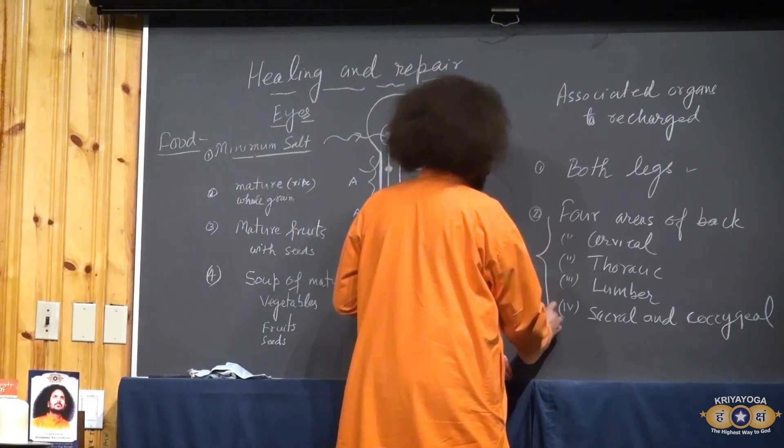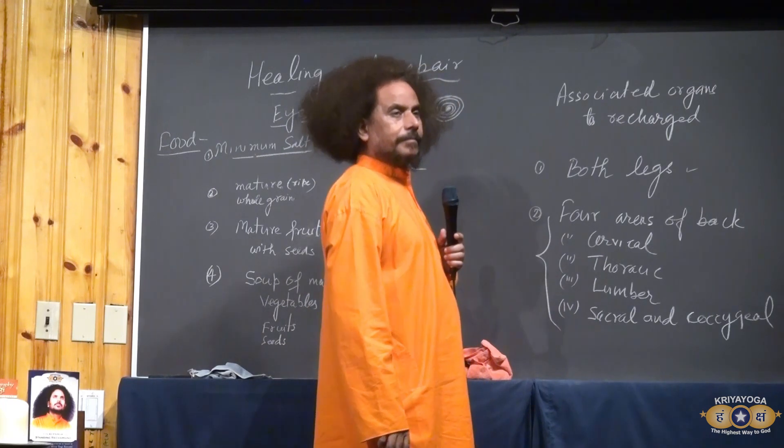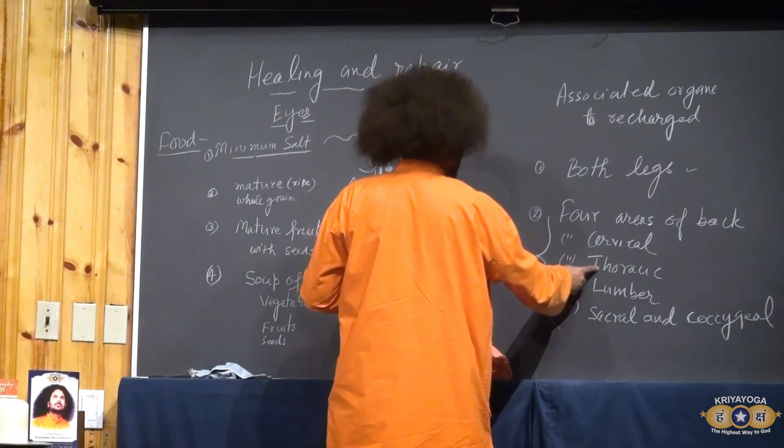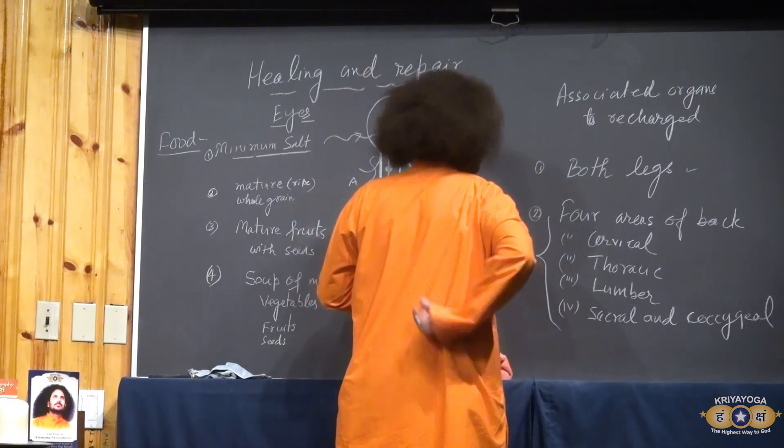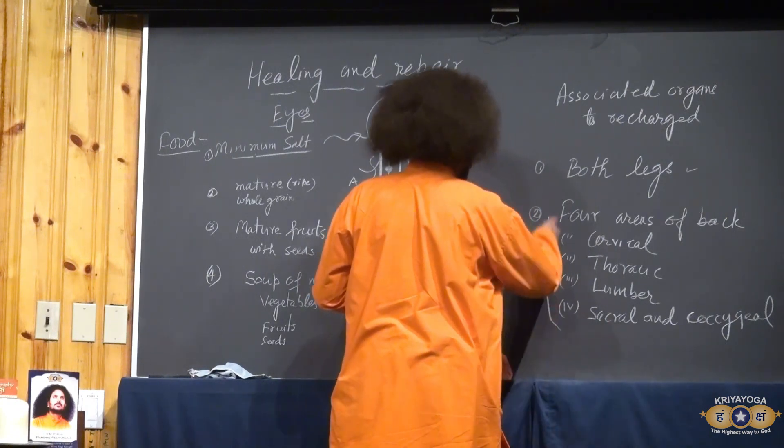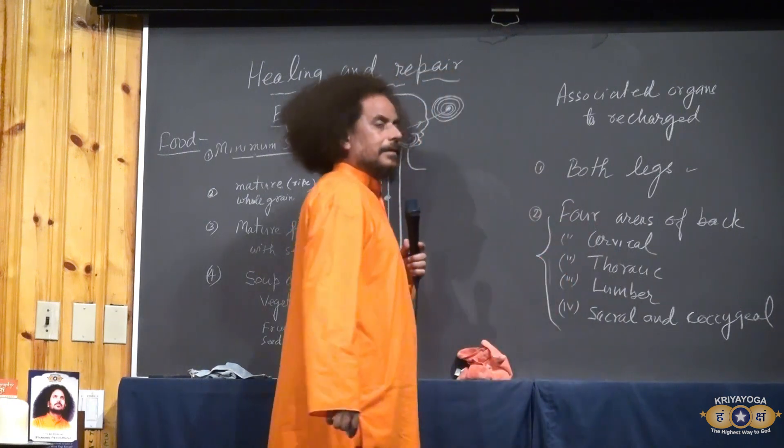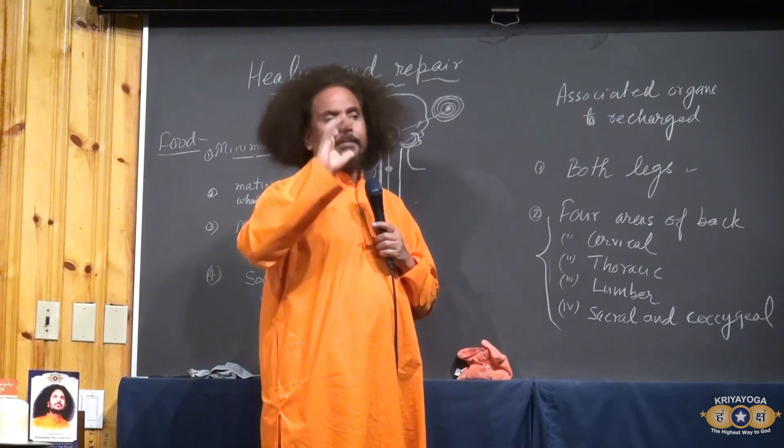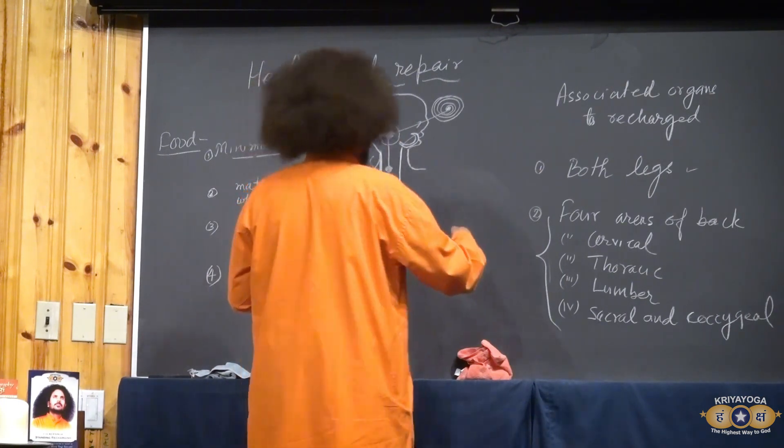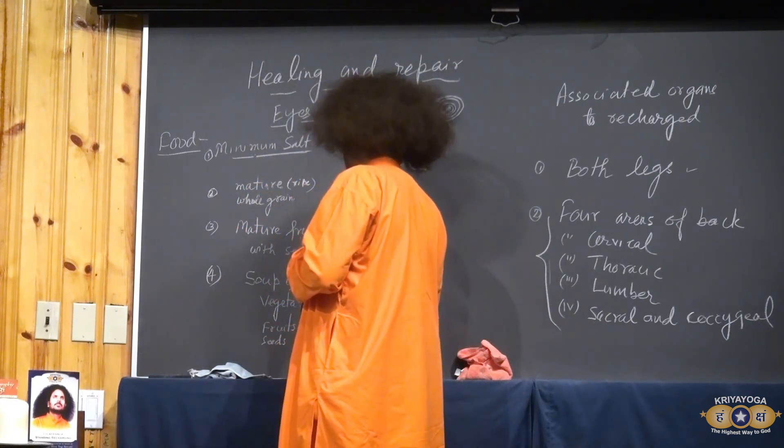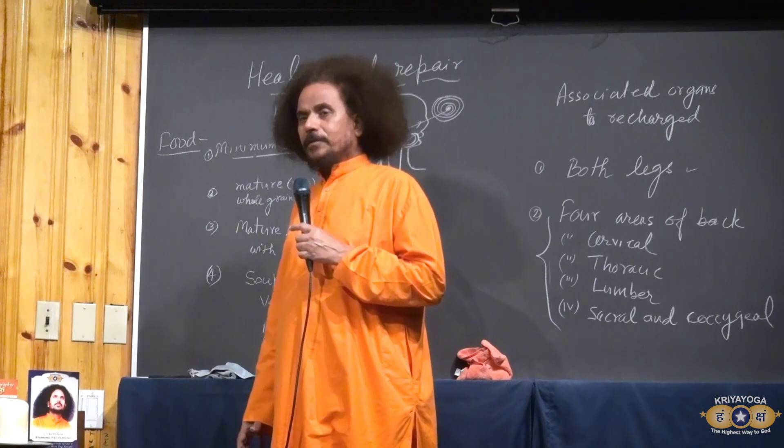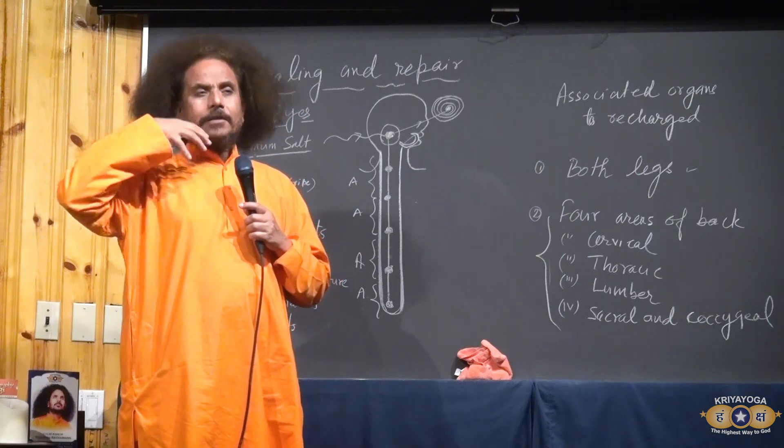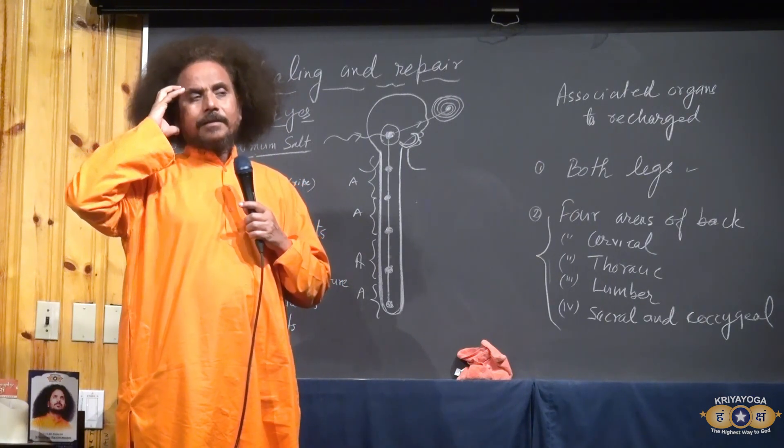And back portion is very important for all repair system. Back portion means, this is the cervical area, this behind chest thoracic area, behind abdomen lumbar area, and the lower part sacral and coccygeal. Try to turn, relax right and left alternately, having the upward vision, tongue rolled back, and watching the breath. By doing this, you will find you are able to recharge the structure of not only eyes, ear also. Your gums also, teeth also. All the apparatus which is associated with the head and face will be charged.